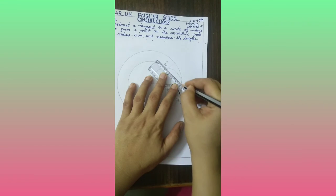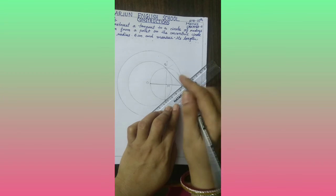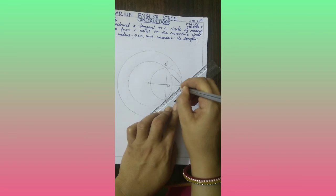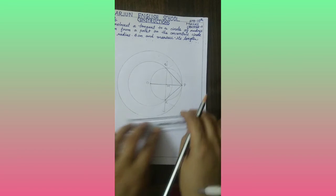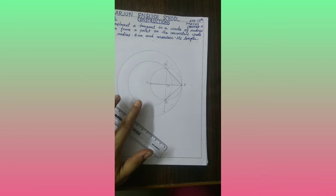Now draw line segments PQ and PR. These two line segments are tangents on this circle of radius 4 cm.